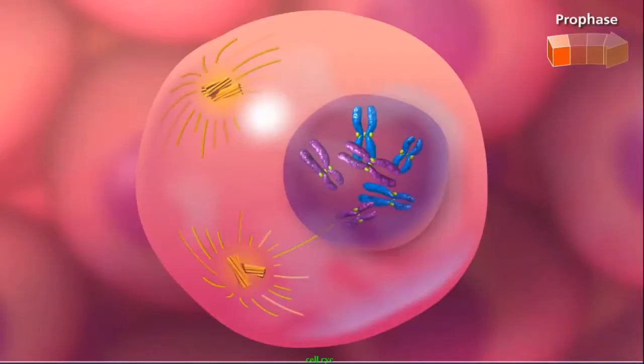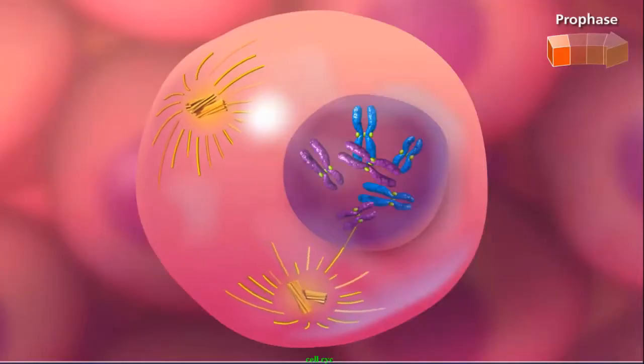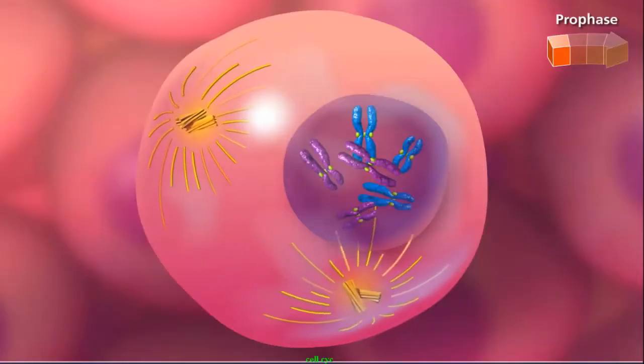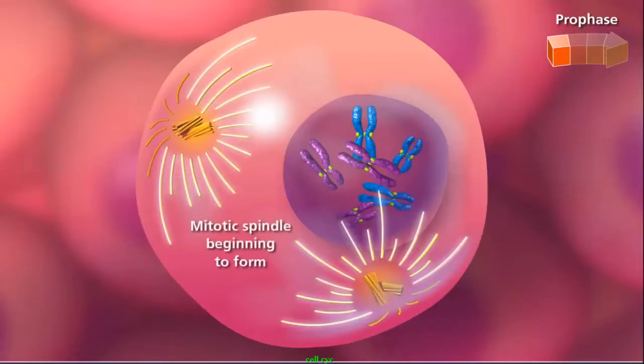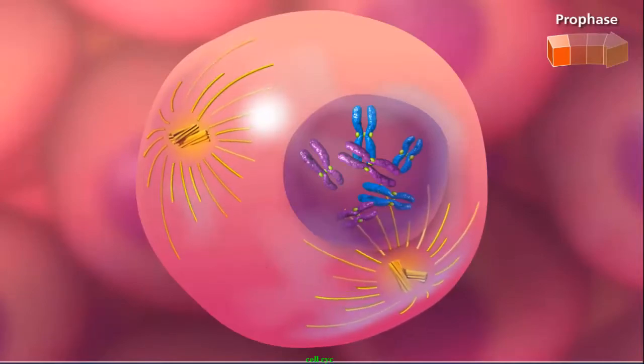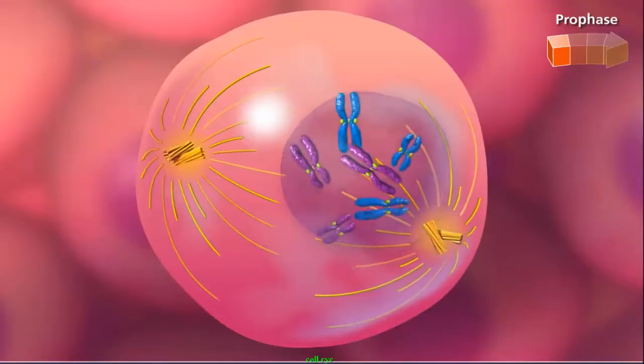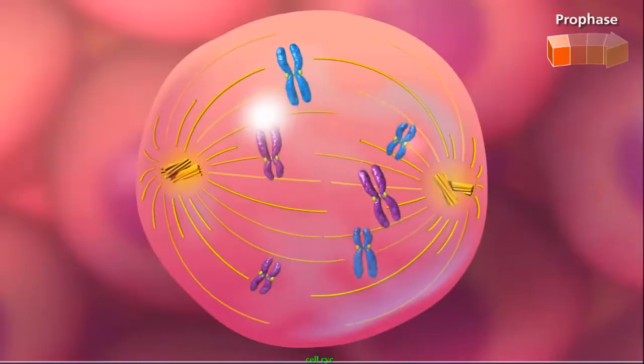In animal cells, centrioles play an important role in the distribution of the chromosomes in the dividing cell. The centrioles migrate to opposite poles, establishing a bridge of microtubules called the spindle apparatus, and the nuclear envelope breaks down.